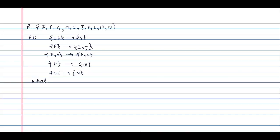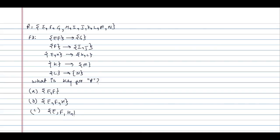Now they are asking: what is the key for the relation R? Option A is EF, option B is EFH, option C is EFHKL, and option D is E only.